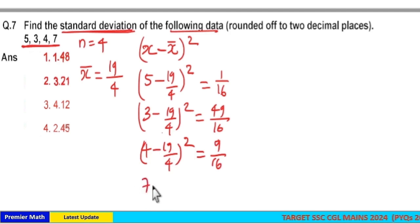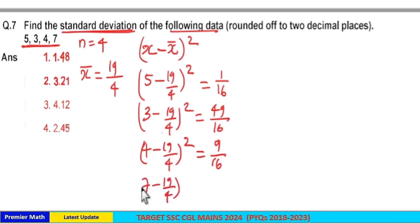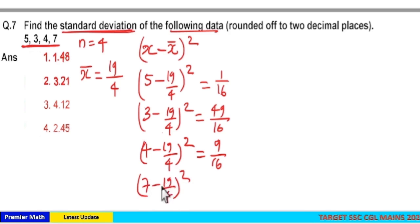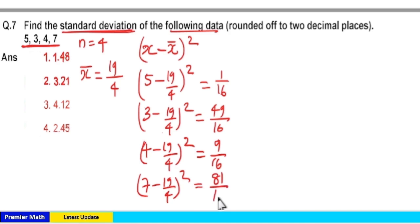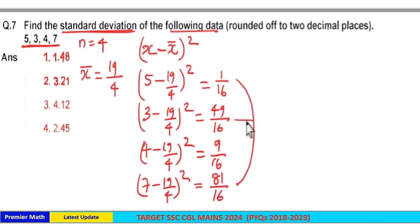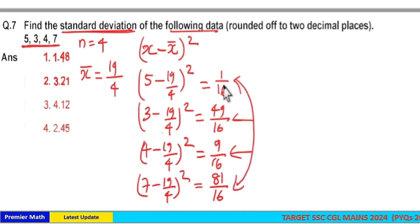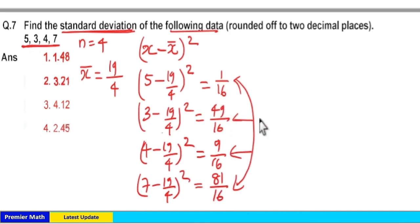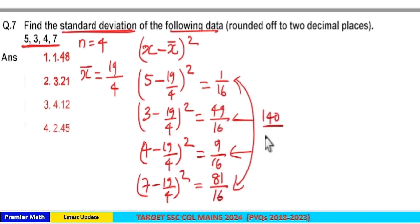For 7: 7 minus 19 by 4, the whole square. 4 into 7 is 28, 28 minus 19 is 9, so 9 by 4 squared is equal to 81 by 16. Now take the sum of all these terms: 1 plus 49 is 50, 9 plus 81 is 90, and 90 plus 50 is 140. In the denominator you have 16, so the sum is equal to 140 by 16.